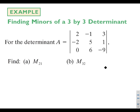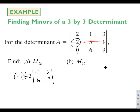Let's find the minor M21. So row 2, column 1 — that's this number. We're going to keep every number not in the same row or column: negative one, six, three, and negative nine. We cross out those numbers and keep the rest. We multiply by the number in front, in this case negative two, and since two plus one is odd, we times by negative one out front. So we've got negative two times the determinant: negative one times negative nine is nine, minus three times six is 18, giving two times negative nine, which is negative 18.